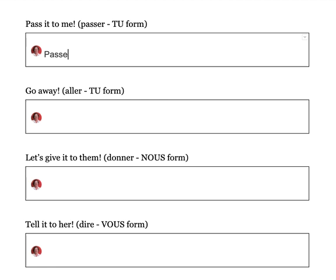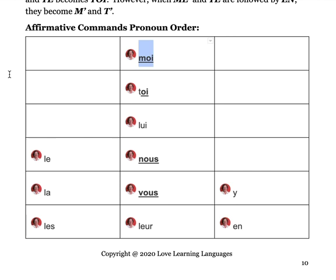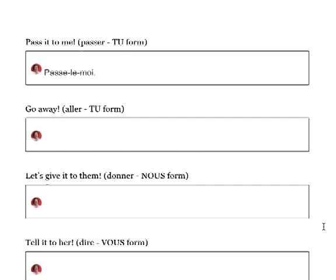Pass it to me in the tu form — using the verb passer. Passe — no S, it's an ER verb — le — hyphen — moi. Passe-le-moi. We're in an affirmative command, so me changes to moi, and it comes after le.